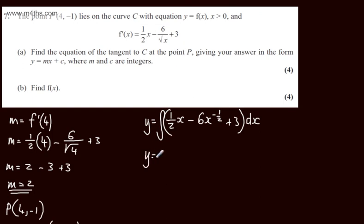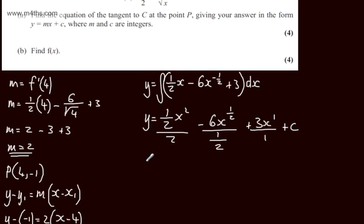So we can say that y will be equal to, raising by a power and dividing by the new power, 1 half x squared divided by 2 minus 6x, we raise by a power, which will be the positive 1 half power, and divide by the new power, plus raised by a power and divide by the new power, plus our constant of integration. So let's go ahead and tidy this up. We've got y equals 1 quarter x squared minus 12x to the power of 1 half, or if you like, the root of x, plus 3x plus c.